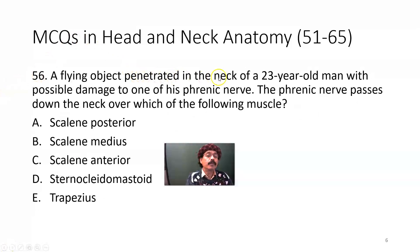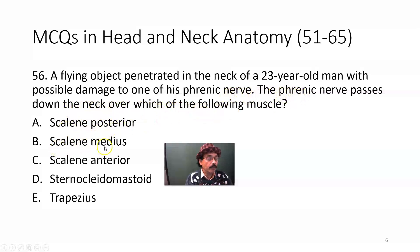A flying object penetrated the neck of a 23-year-old man with possible damage to one of his phrenic nerves. The phrenic nerve passes down the neck over which of the following muscles: scalenus posterior, scalenus medius or middle scalene, scalenus anterior, sternocleidomastoid, or trapezius? The answer is scalenus anterior — the phrenic nerve passes over the scalenus anterior muscle.